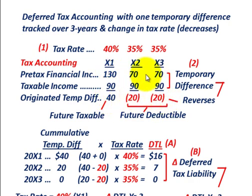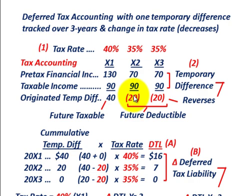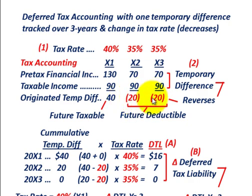For year X2 and year X3, our taxable income of $90,000 is greater than our pre-tax financial income of $70,000, setting up a future deductible amount. We're paying taxes on $20,000 in advance for each of those two years. So the $40,000 originated temporary difference from year X1 reverses out over the next two years — a reduction of $20,000 for each year — and those are future deductible amounts.